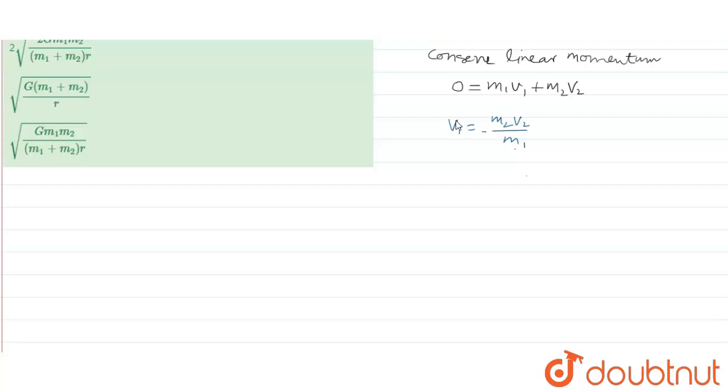Now putting in the value in the equation, G m1 m2 upon r is equal to half m1. We will put the value of v1 square, which means m2 square v2 square upon m1 square.